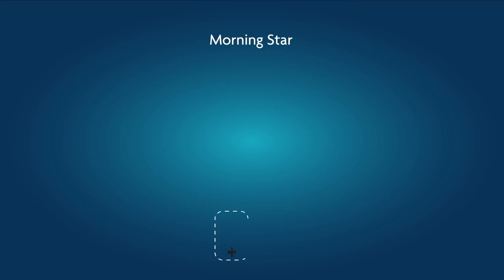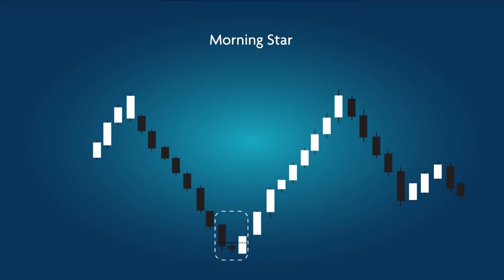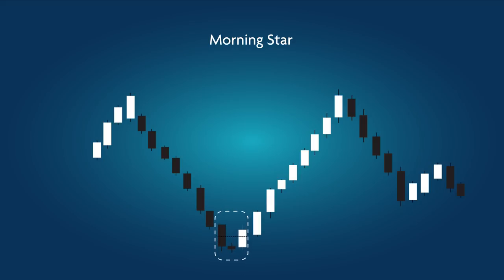Morning Star: a bullish pattern opposite to that of the Evening Star. At its base is a narrow-range candle indicating pattern reversal, followed by a clear candle rising at least halfway above the body of the black candle preceding the narrow-range candle.